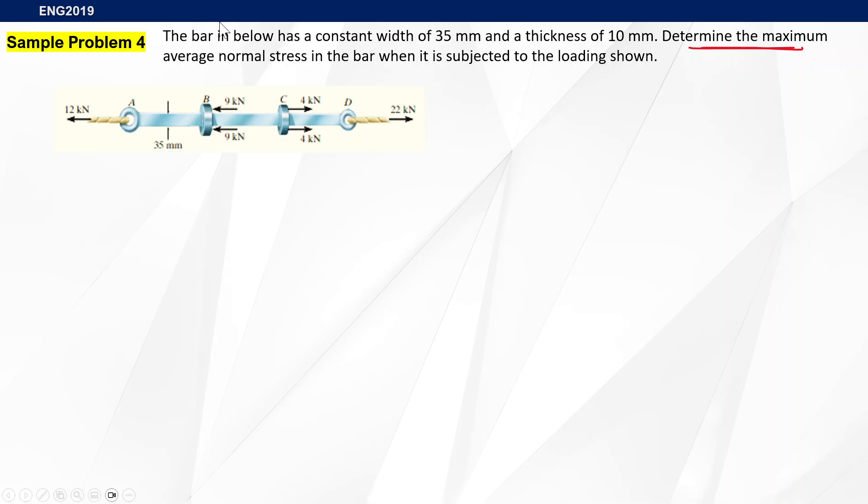Let's have our first sample problem. We're here to determine the maximum average normal stress in the bar when it's subjected to the loading below. The bar has a constant width of 35 millimeters and a thickness of 10 millimeters, giving us a cross-sectional area of 350 millimeters squared.